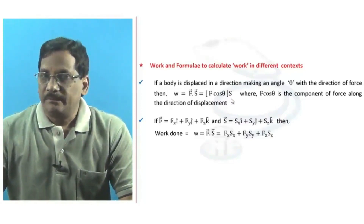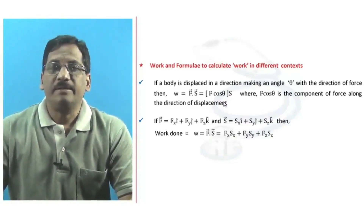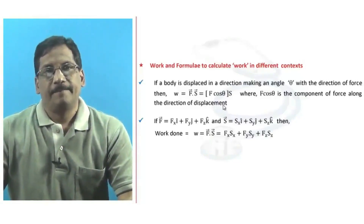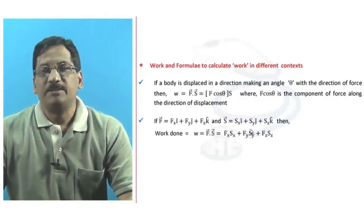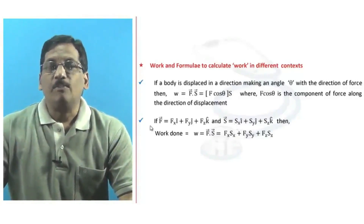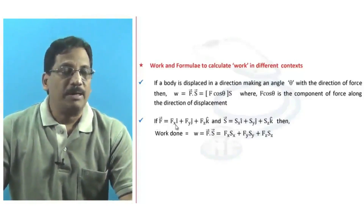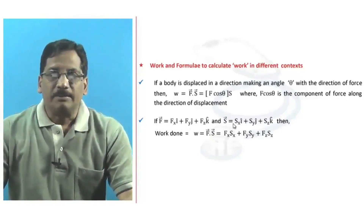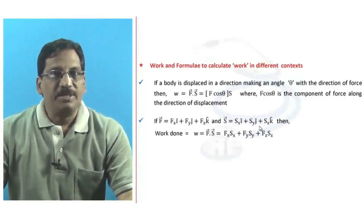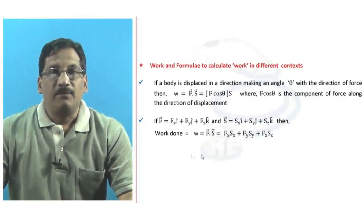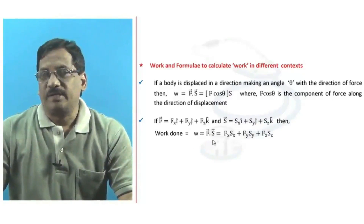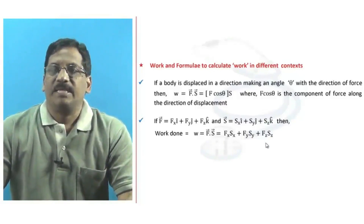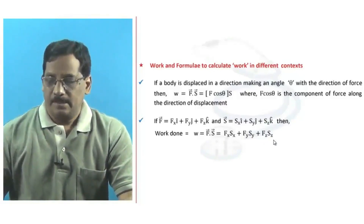For different values of theta, we can understand the quantity of work done under the given context. If the force vector and displacement vector are given in component form, such that F = Fx i-cap + Fy j-cap + Fz k-cap, then the work done, being the dot product of force and displacement vectors, equals Fx·Sx + Fy·Sy + Fz·Sz.